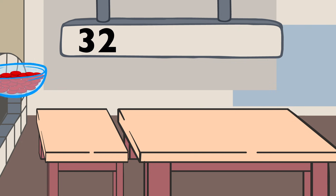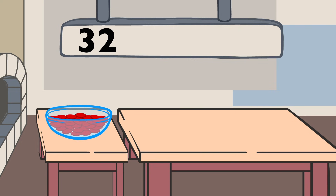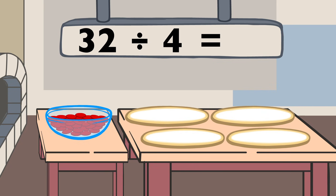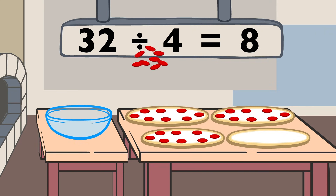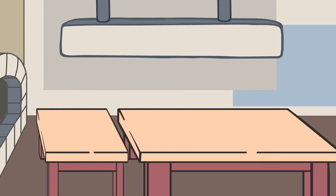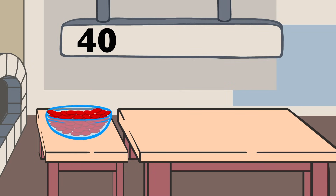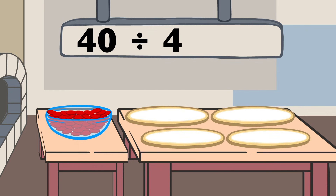Thirty-two divided by four equals four. Forty divided by four equals ten.